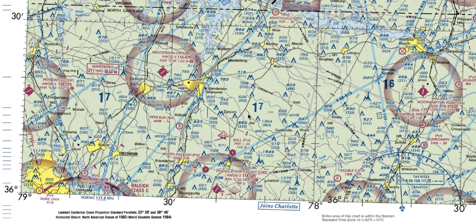How to find a latitude longitude on an aeronautical chart. Here's an excerpt from the sectional chart near Charlotte, North Carolina. The lines of latitude, the horizontal lines, start here at 36 degrees north. There's a big grid box here, and if you go north of 36 degrees you'll go from 36 degrees up to 36 degrees 30 minutes. So these boxes are 30 minutes by 30 minutes in size.